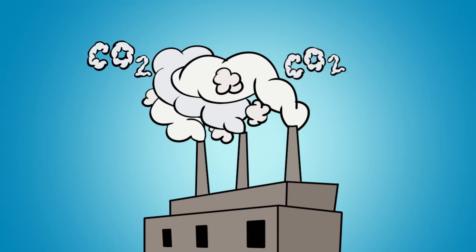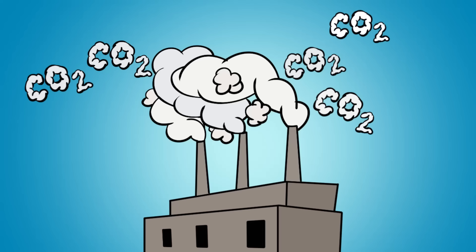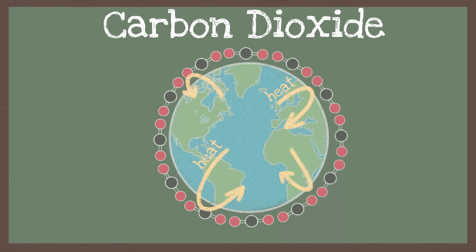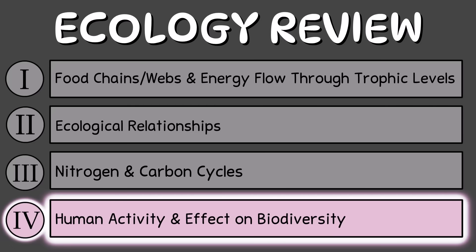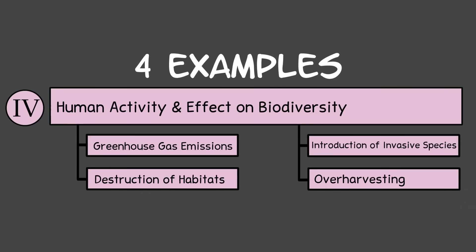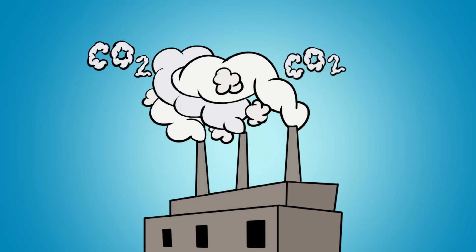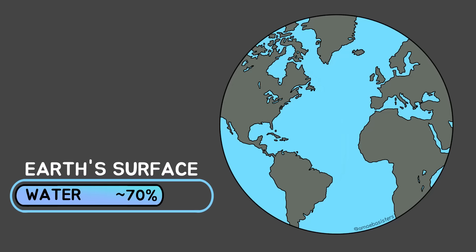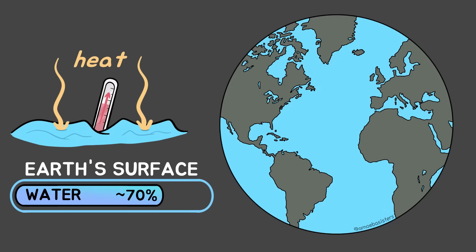The burning of fossil fuels produces a lot of carbon dioxide, leading to concerns of excessive CO2 in the atmosphere. Carbon dioxide is a greenhouse gas, meaning it can trap heat in the atmosphere. Oceans, which make up approximately 70% of our planet's surface, are considered a buffer for the planet — they regulate our climate. A significant portion of the heat from the atmosphere is transferred to the oceans, raising ocean temperatures.